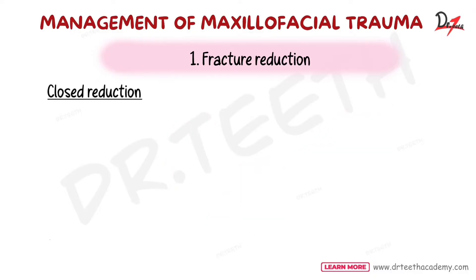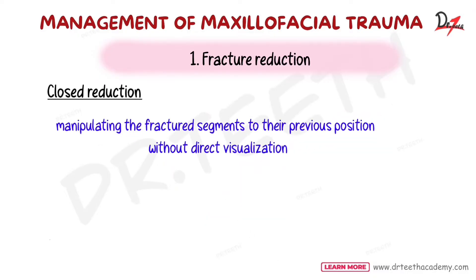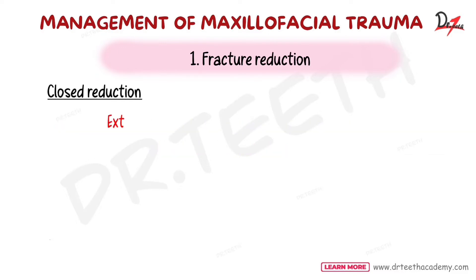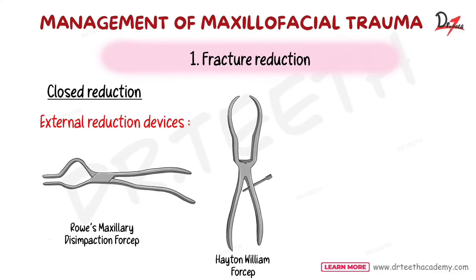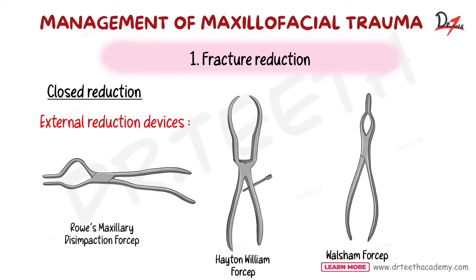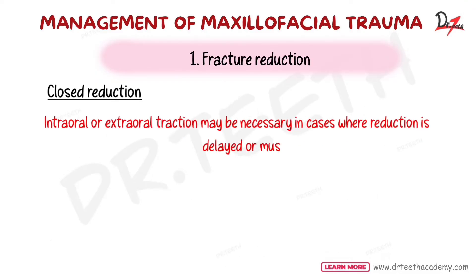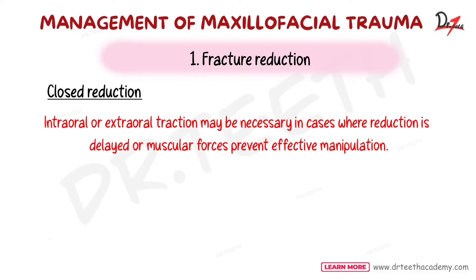Closed reduction involves manipulating the fractured fragments to the previous position without direct visualization — you are not seeing the bones directly. External reduction devices like Rowe's disimpaction forceps, Hayton-Williams forceps, Walsham forceps, and Ash forceps can be used for this.